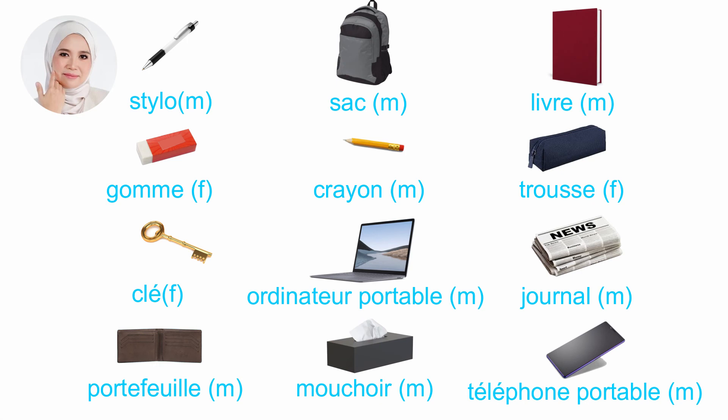So here you have stylo, sac, livre, crayon, portefeuille, mouchoir, and téléphone portable. How many items? You have one, two, three, four, five, six, seven, eight, nine. Nine items which are masculine nouns, and you have a few items which are feminine nouns.